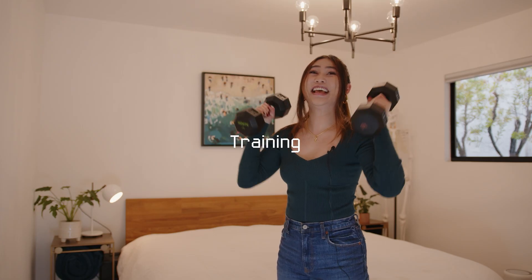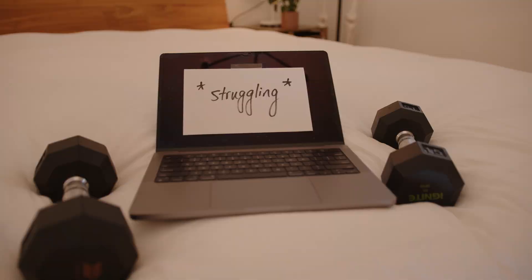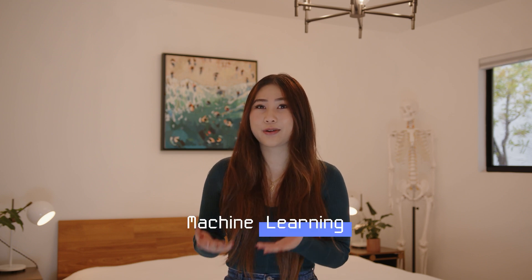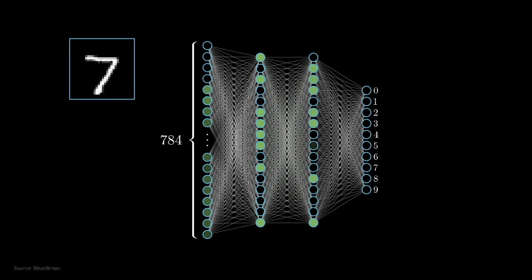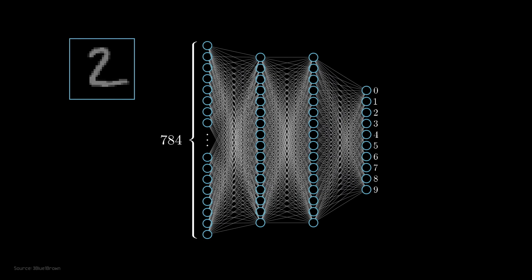But before a neural network can start generating correct outputs, it needs to be trained. Think of our initial neural network as a little baby that's really good at math and literally nothing else. It needs to learn — hence machine learning — and in order to do that, we have to feed it a lot of data to look at so it can start recognizing patterns. When we put these parts together, we can see our neural network actually being able to read numbers without any human instruction.